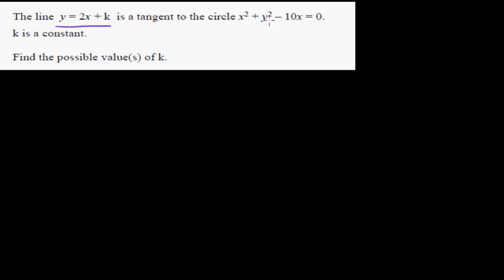The line y equals 2x plus k is a tangent to the circle x squared plus y squared minus 10x equals 0, where k is a constant. Find the possible values of k.